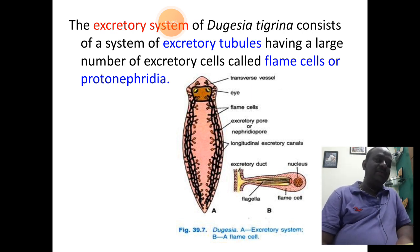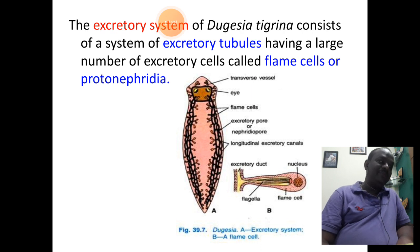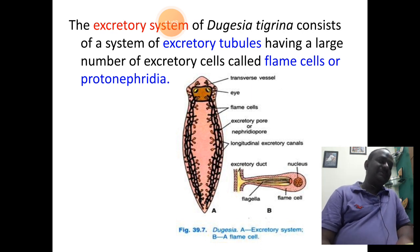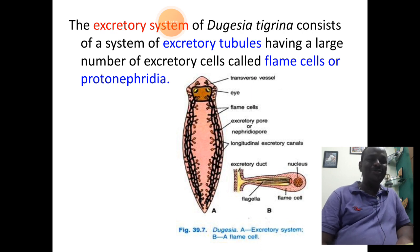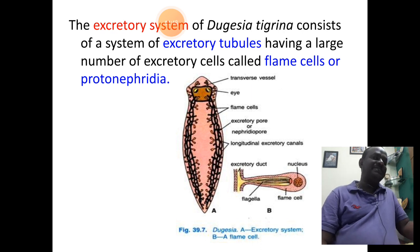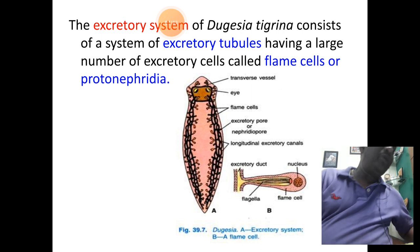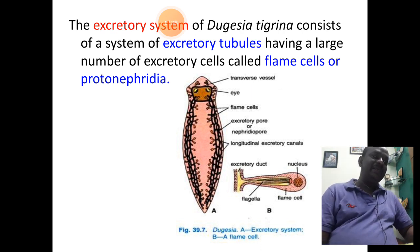The excretory system of an animal involves the removal of excretory waste from the body. In case of Dugesia planaria, the excretory system is very well developed but it is of primitive type — very simple. It consists of a system of excretory tubules with a number of excretory units called as flame cells or solenocytes.